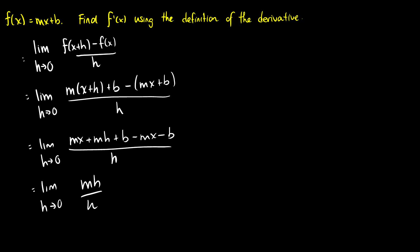Now the h's will cancel, so we're left with the limit as h goes to zero of m, which is just equal to m. Of course we know the derivative of mx plus b — m is the slope and the derivative gives the slope of the tangent line — so we find that the slope is m. That makes sense.